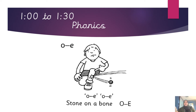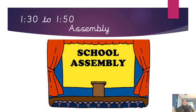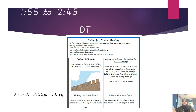We will meet on Teams at 1 o'clock for our phonics lesson, and today's split digraph is O-E: stone on a bone. At 1:30 it will be time for our whole school assembly. We will come back onto Teams at 1:55 for our DT lesson, and today we will be learning about all the skills we need for our castle making.